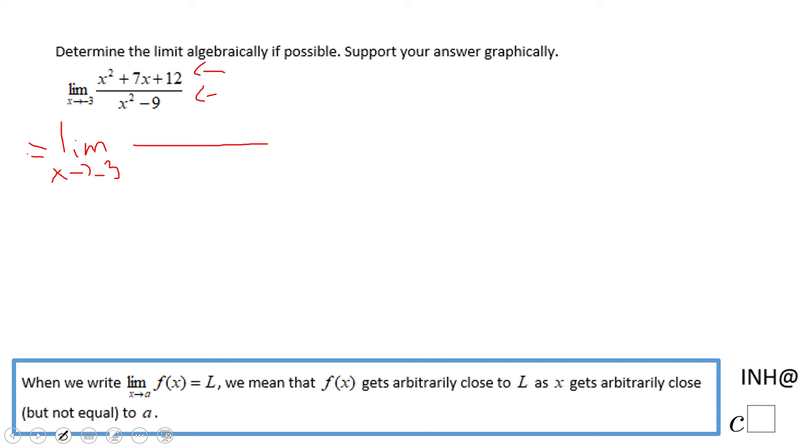For the numerator, we're looking for two numbers whose product is 12 and sum is 7, that is 4 and 3. So we're going to have x plus 4, x plus 3, the factored form.